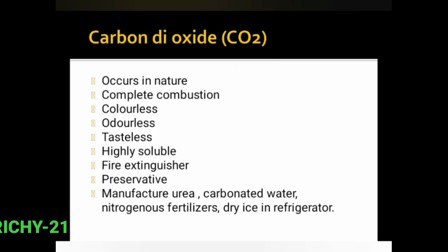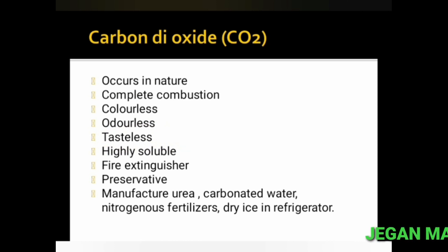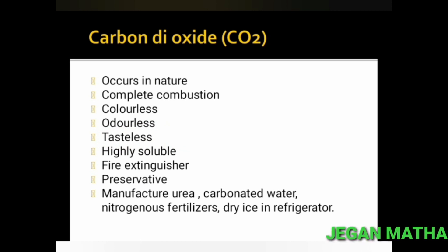Carbon dioxide (CO2) occurs in nature in free and combined forms. The combined form is found in minerals like limestone, magnesite, etc. It is formed by complete combustion of carbon or coke. Properties: it is colorless, odorless, tasteless, and highly soluble in water. It also takes part in photosynthesis.